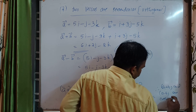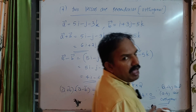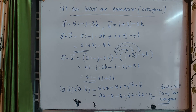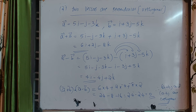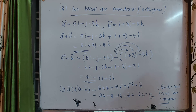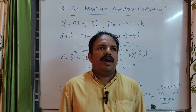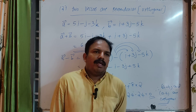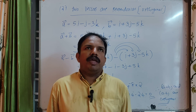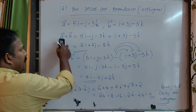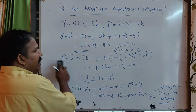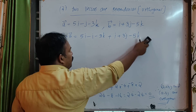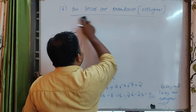The dot product value is zero. Therefore a plus b and a minus b are orthogonal. Orthogonal means perpendicular. The dot product of a plus b and a minus b equals zero, which proves they are perpendicular to each other.